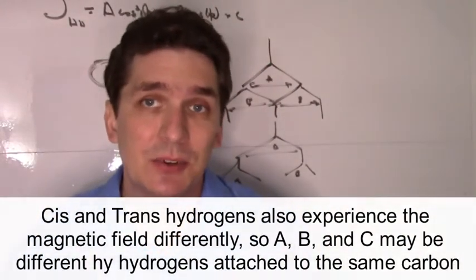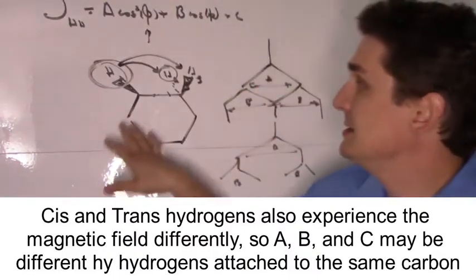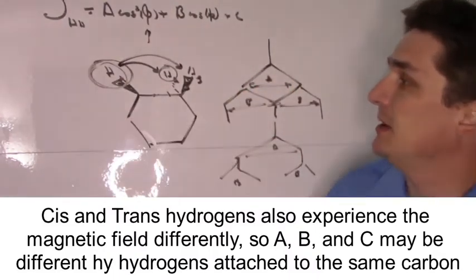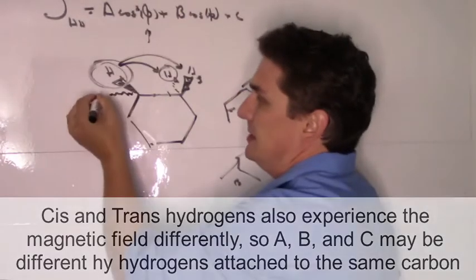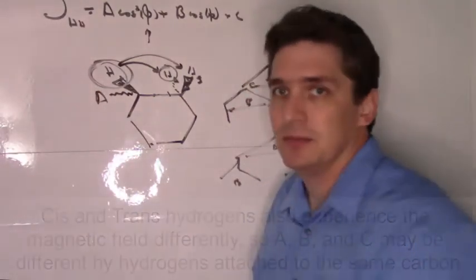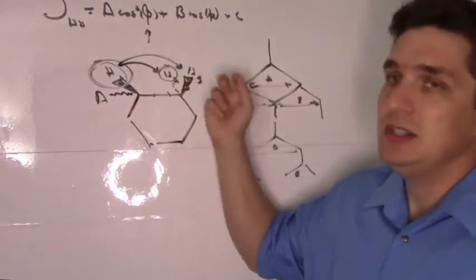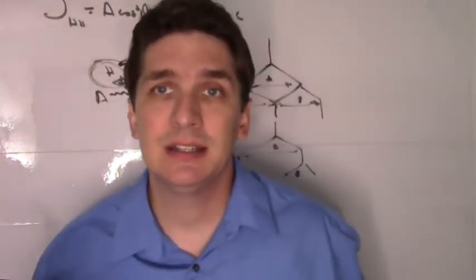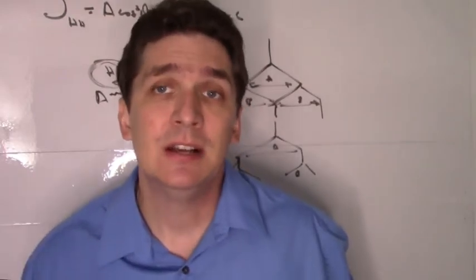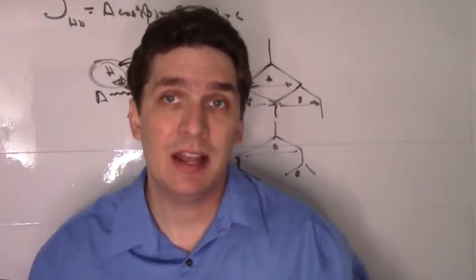In this simple cyclohexane example with one hydrogen—we can call this dummy atom A that doesn't give J-coupling—just these two hydrogens alone show coupling that looks different than what we'd expect if they could rotate freely.